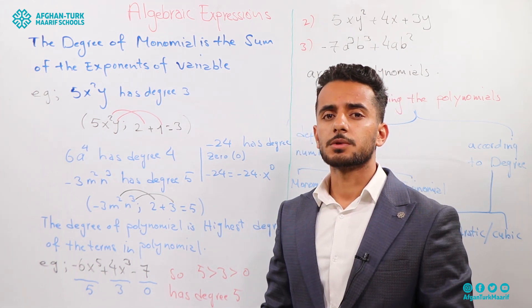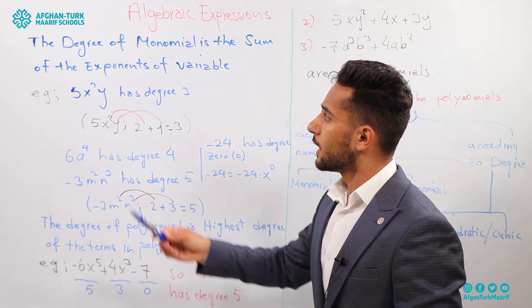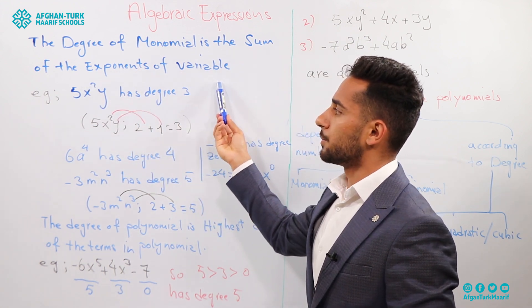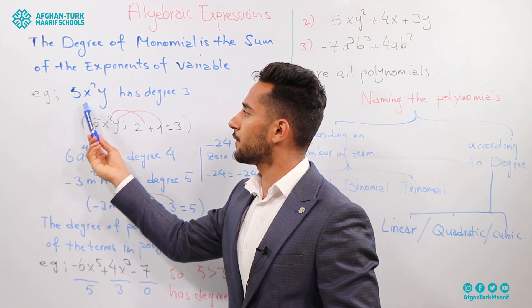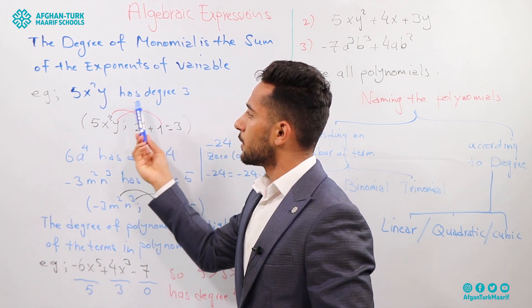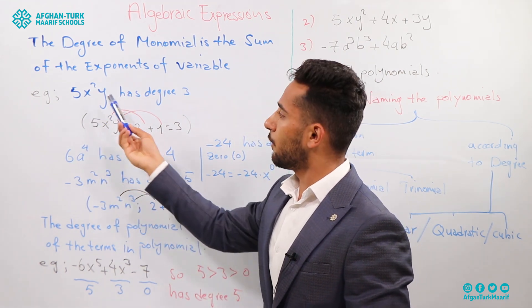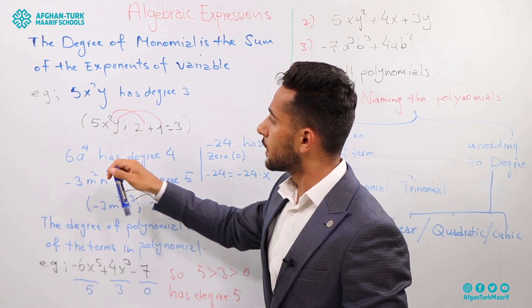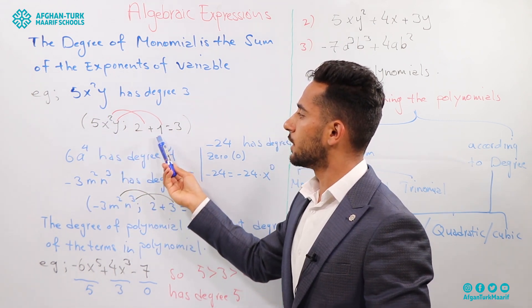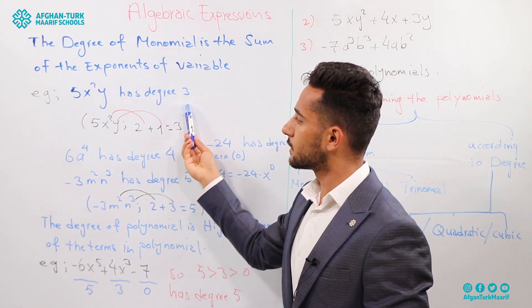We also give special names according to the degree. First, we need to know what degree means. The degree of a monomial is the sum of the exponents of its variables. For example, 5X squared Y has degree 3, because the power of X is 2 and the power of Y is 1, and 2 plus 1 equals 3.